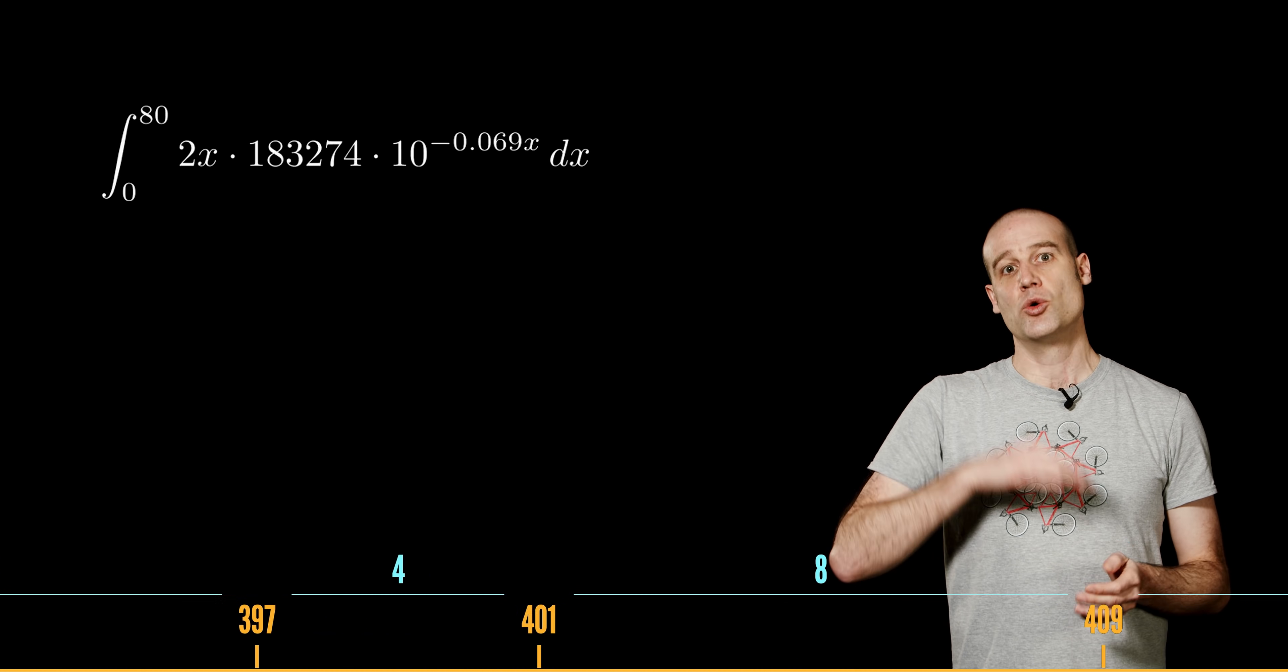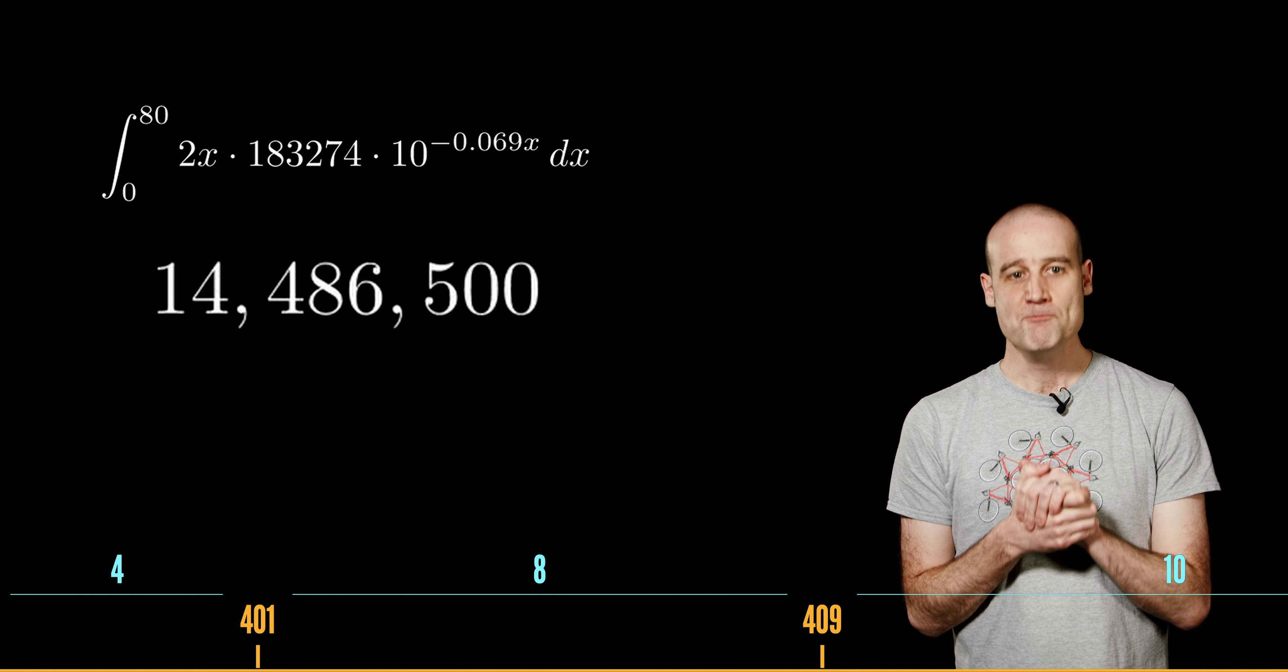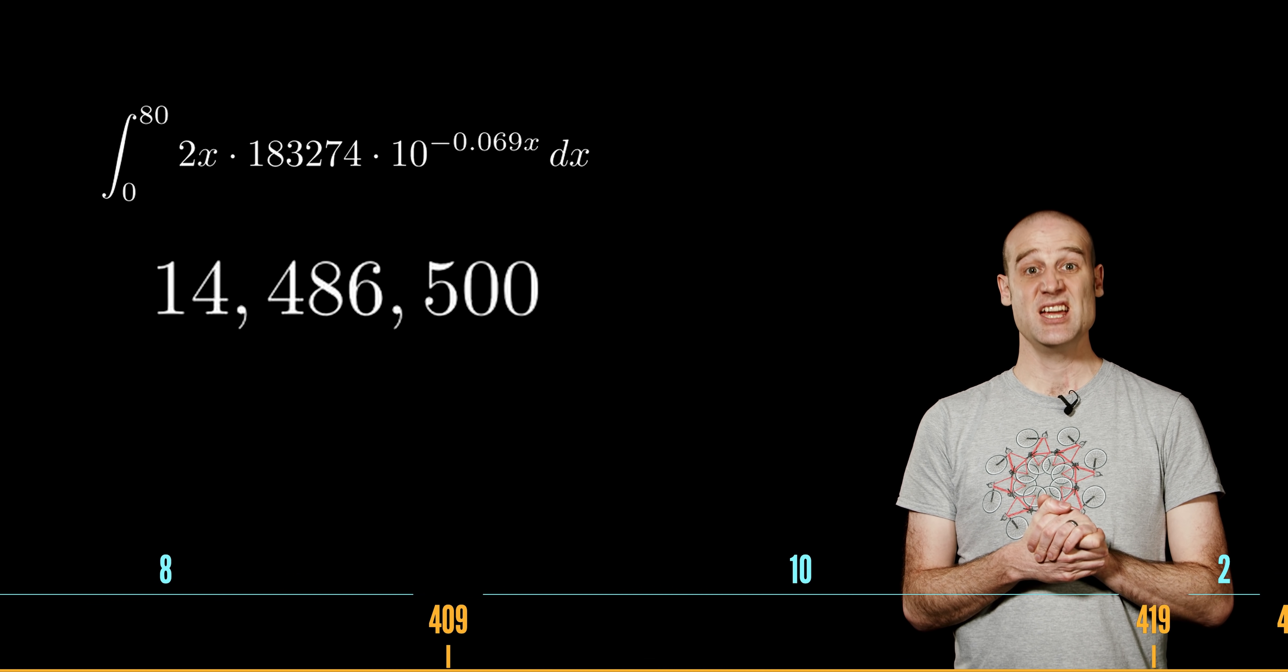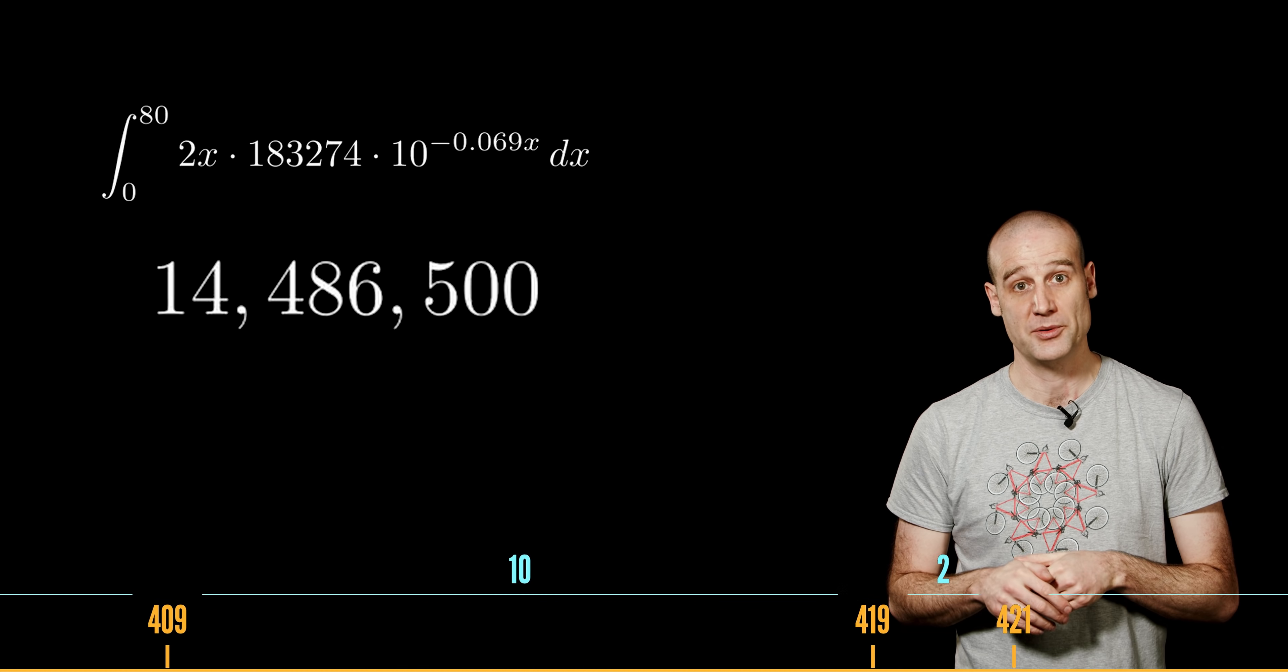It predicts that the 1 millionth prime number should be 14,486,500-ish. I haven't bothered to put it back on the 3 because it's a rough approximation.